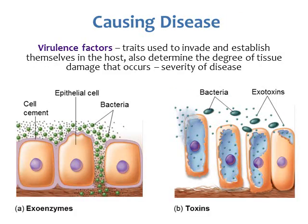Once the bacteria gets into the host cell, it can start causing disease. Bacteria produce virulence factors — traits used to evade and establish themselves in the host. Some virulence factors determine the degree of tissue damage and severity of disease. Bacteria can produce exoenzymes that destroy host cells, and can also release toxins that break down host cells, causing the person to become sick.